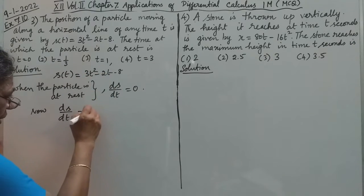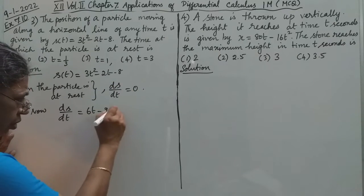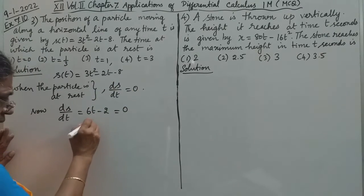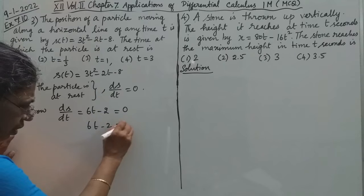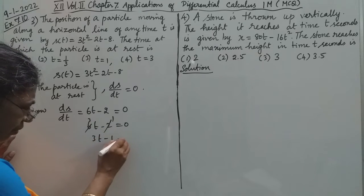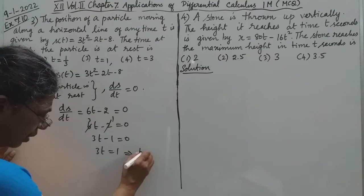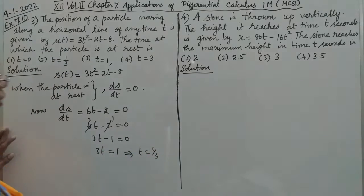Differentiating 3t² - 2t - 8 gives us 6t - 2, and the constant becomes zero. This should be equated to zero: 6t - 2 = 0. Simplifying by dividing by 2: 3t - 1 = 0, so 3t = 1, which gives us t = 1/3 units.